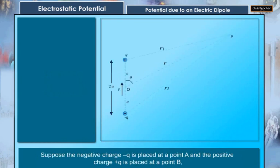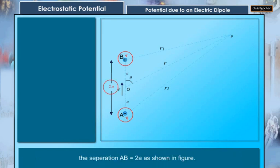Suppose the negative charge minus Q is placed at a point A and the positive charge plus Q is placed at a point B. The separation AB is equal to 2A as shown in figure.